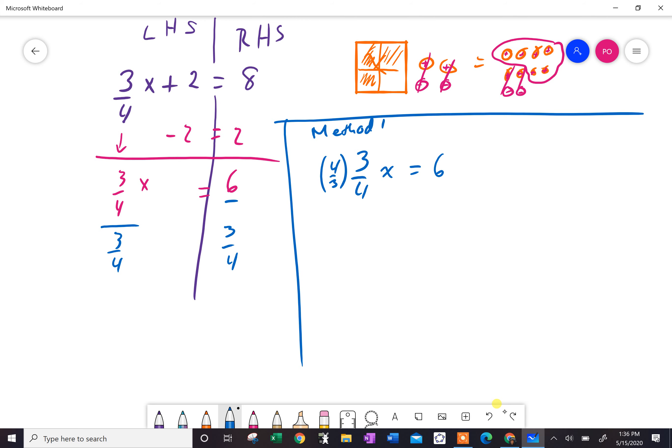One times x, you guessed it, just gives you x. Well, if you do that to one side, you have to do it to the other. There's two ways of doing this. You could say six times four equals 24 over three, which is eight. Or, and this is what I also like, you could say, well, hmm...